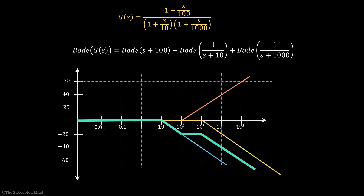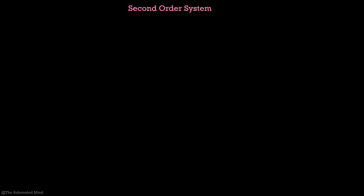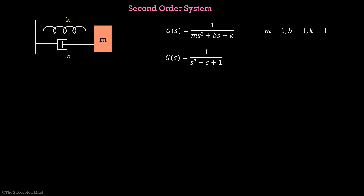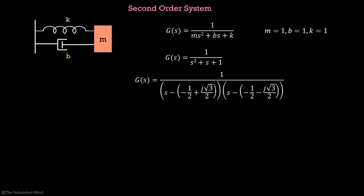Now let us see how to draw Bode plots for a second-order system. Consider the well-known spring-mass-damper system. The transfer function from impulse input to change in position of the mass is second order in nature. For the sake of this example, let m = 1, k = 1, and b = 1, giving the transfer function 1/(s² + s + 1). We factor the denominator into its roots and find that this system has two imaginary poles. How do we plot the Bode plot for a system with imaginary poles and zeros?